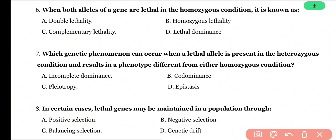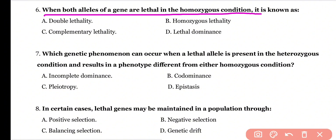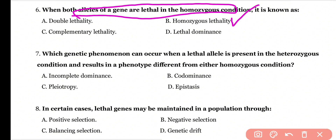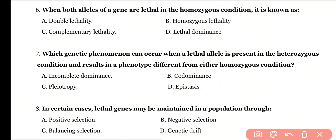Question 6: When both alleles of a gene are lethal in homozygous condition, it is known as: double lethality, homozygous lethality, complementary lethality, or lethal dominance? Correct answer is option B. In homozygous lethality, both alleles of the gene pair are in homozygous condition.